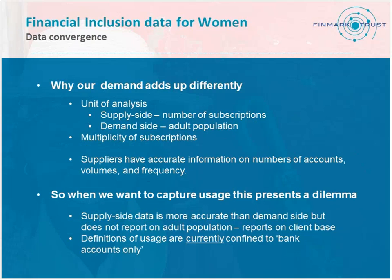There's always a tussle between demand side and supply side. It's hard for demand side to tally up easily with supply side for several reasons. One is the unit of analysis: supply-side data is always based on number of subscriptions, so a bank will always tell you the number of account holders. But an adult can have multiple accounts, so how do you tally up the results? Similarly, demand-side data is always based on the population — it's nationally representative for an adult population — so the results are very hard to compare directly.